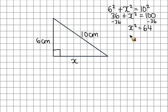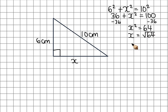Now the opposite of squaring is square rooting, so I need to square root both sides to give me x. It's the square root of 64, and the square root of 64 is 8. So we know that x is 8 centimetres long.